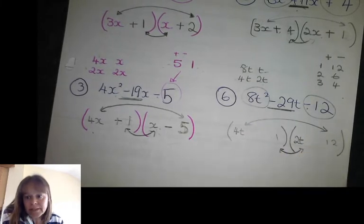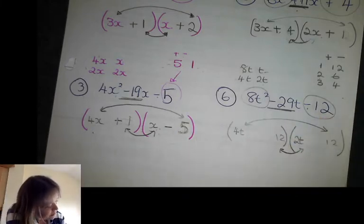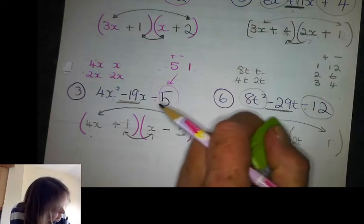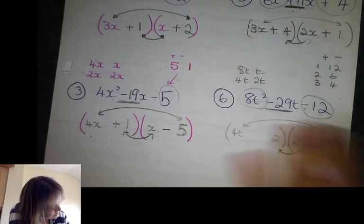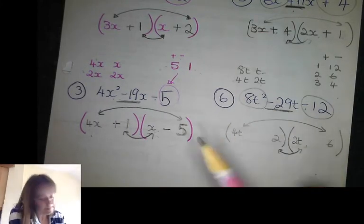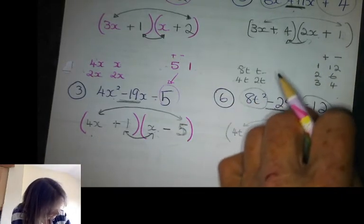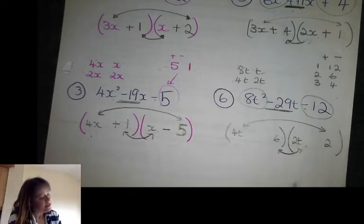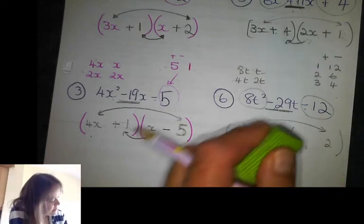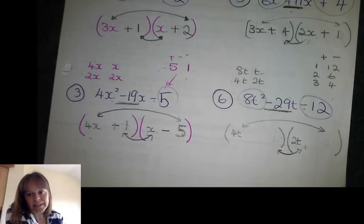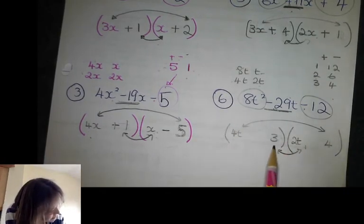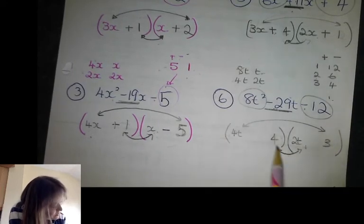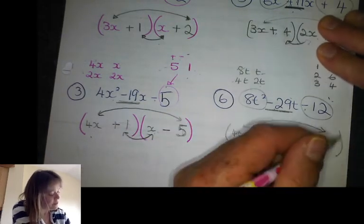Trying one and twelve: that gives 48t and 2t — never going to make minus 29. Swap around: twelve and one gives 24t and 4t — no chance. Try two and six: gives 40t — not going to make 29. Switch it around: 12t and 8t — still not going to make minus 29. Try three and four: gives 16t and 6t — not going to make minus 29. Switch: 12t and 8t — also not going to make minus 29. So unlucky — I've chosen wrong.